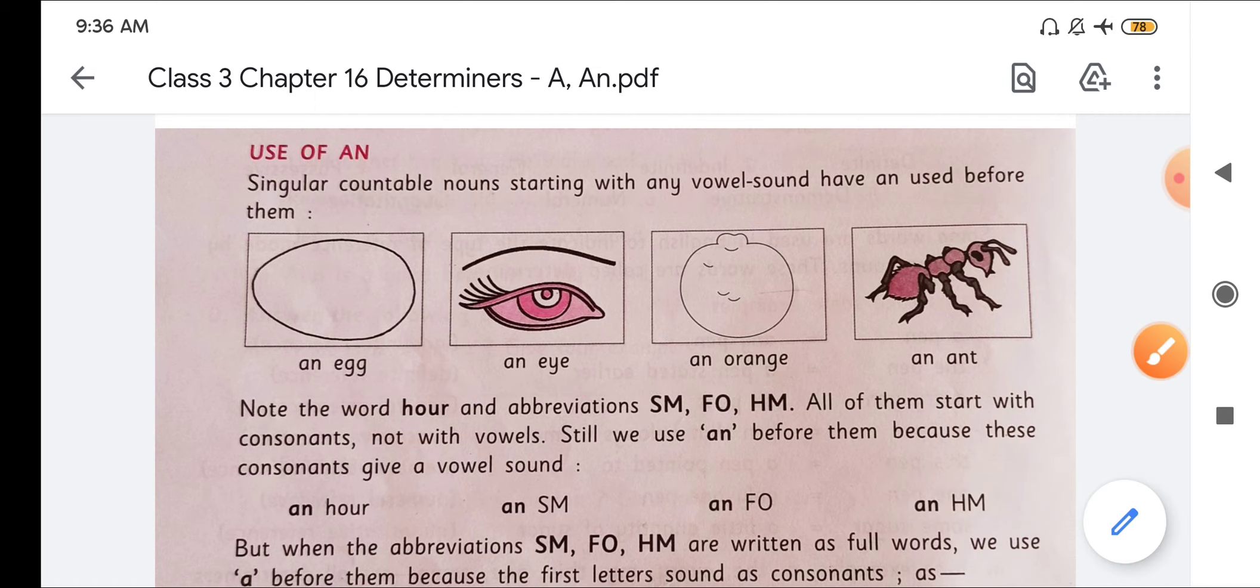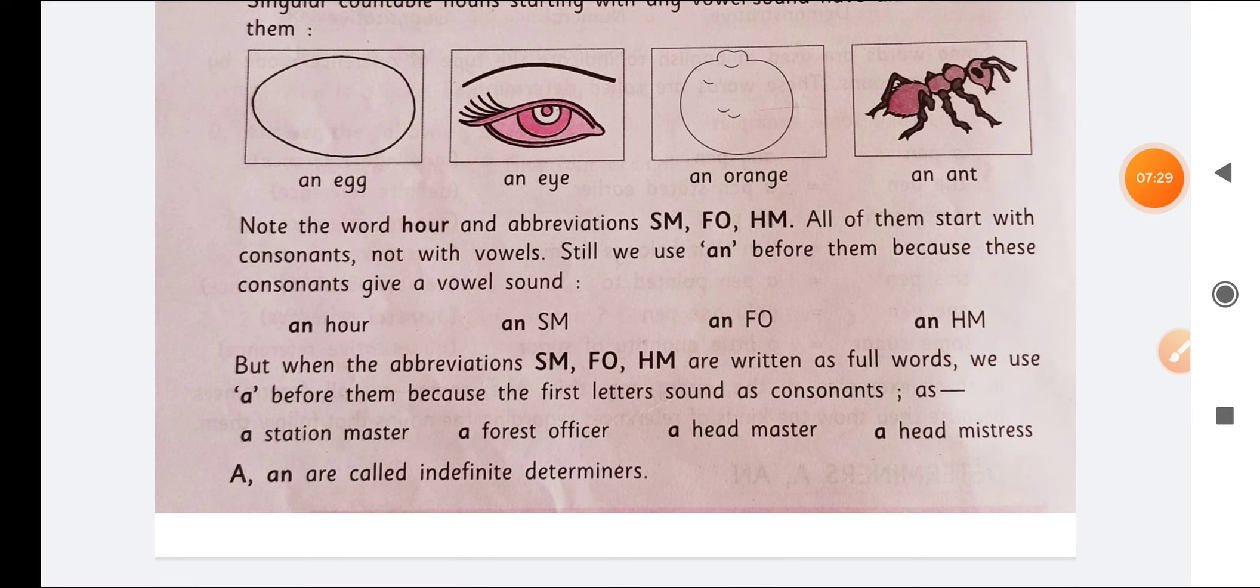So now note the word hour and abbreviation SM, FO, HM. All of them start with consonants. So when the word hour and abbreviations SM, FO, HM, these are the abbreviations. So all of them start with consonants, not with vowels. Still we use an before them because these consonants give a vowel sound.